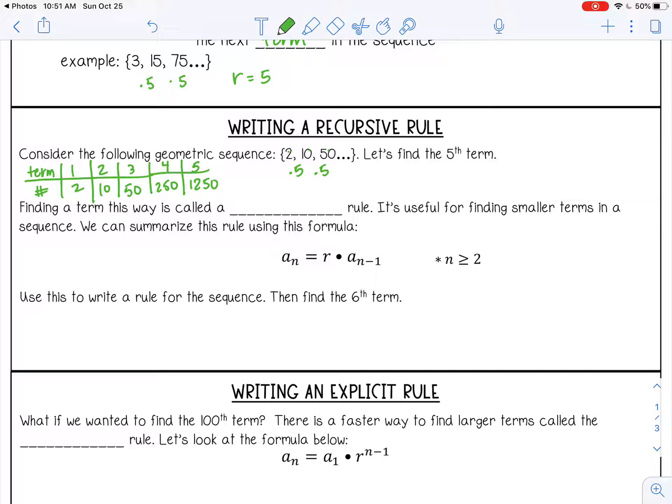So finding a term this way is called the recursive rule. Basically, you just keep multiplying until you get to the term you want. And that's fine for finding smaller terms like the fifth term in a sequence. But you would not want to use that to find like the 100th term because it's going to take you forever.